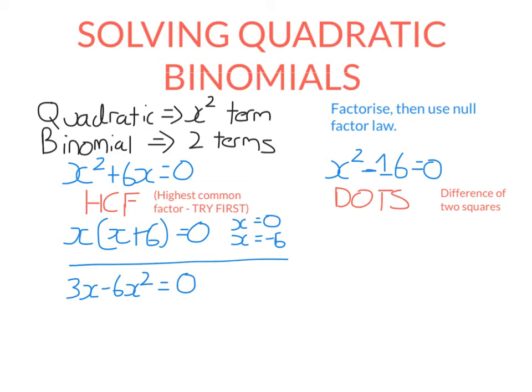Let's look at this equation here. It's a quadratic because of the x squared term, a binomial because it has two terms. We first try highest common factor — do these two terms have a common factor? Yes, they do. Both terms have an x, so we put an x out the front. But 3 and 6 also have a common factor — their highest common factor is 3, the highest number that goes into both. So I put the highest common factor out the front, then in the brackets I divide each term by the highest common factor.